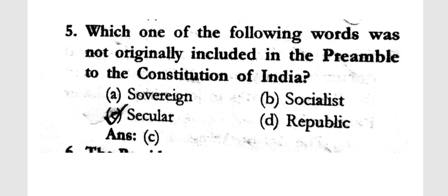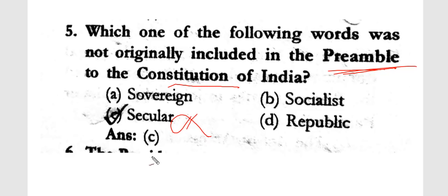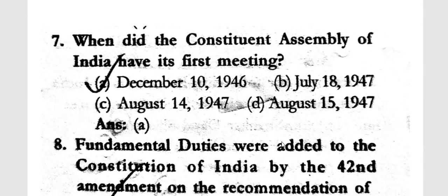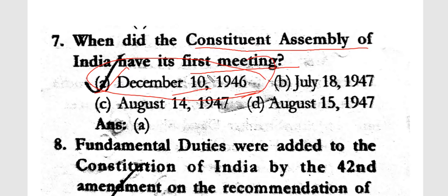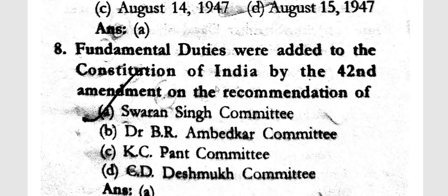Which word was not originally included in the Preamble to the Constitution of India? The words 'Socialist' and 'Secular' were not originally included in the Preamble. The Constituent Assembly of India had its first meeting in December 1946.